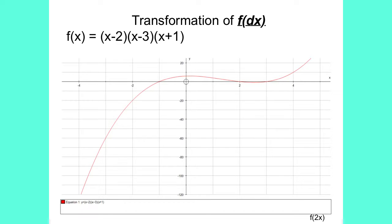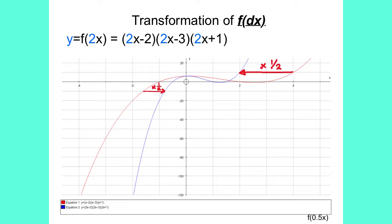The fourth transformation is the transformation of f brackets d times x. If we draw the graph f of x equals x minus 2, x minus 3, x plus 4, we notice we have x-intercepts at minus 1, plus 2, and plus 3. If we now draw the graph of y equals f brackets 2x, which equals 2x minus 2, 2x minus 3, 2x plus 1, you notice the graph has been squashed towards the y-axis by a scale factor of 1 over 2, which is a half.